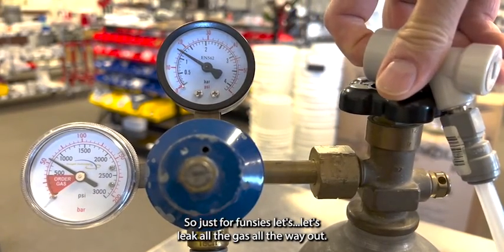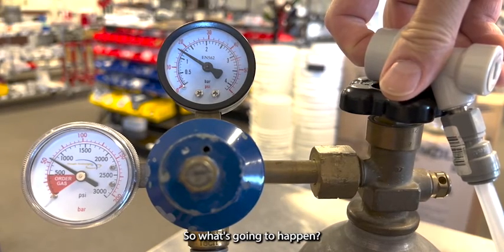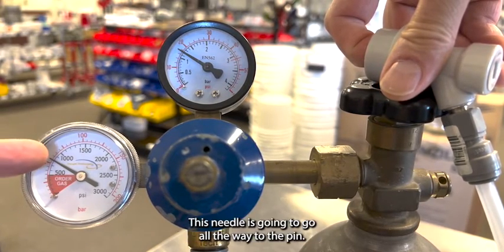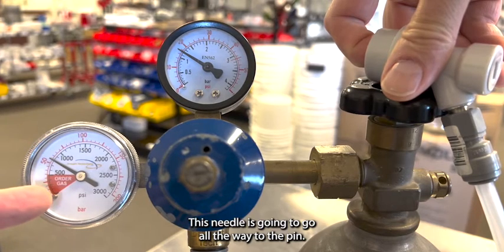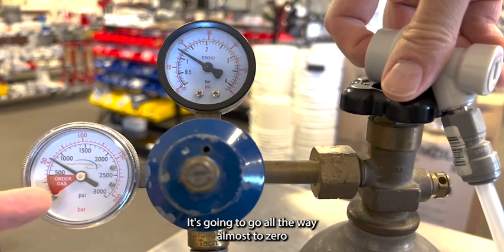Let's leak all the gas all the way out. So what's going to happen, just like we talked about earlier, this needle is going to go all the way to the pen. It's going to go all the way almost to zero before the working pressure gauge follows.